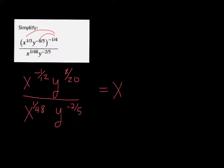And for that, you want to have a good calculator to do the fractions for you. So I get x to the negative 5 over 48 power. And then 8 over 20 subtracted negative 2/5 is 4/5.